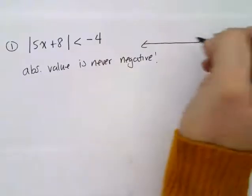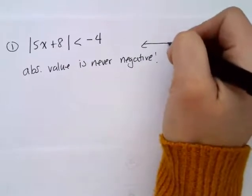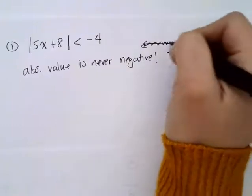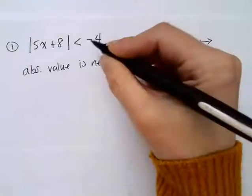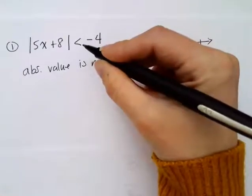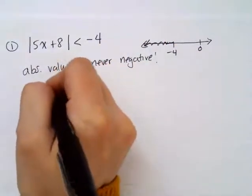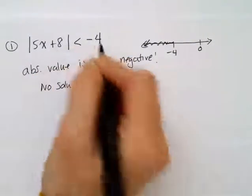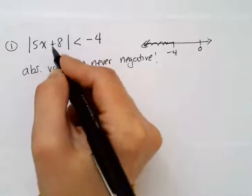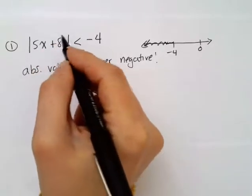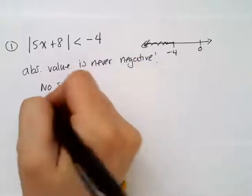If we think about where negative 4 lives on the number line — 0 is here, negative 4 is here — less than negative 4 is to the left of negative 4, and all those numbers are also negative. So if absolute value is never negative, this statement can never be true, because that would mean absolute value is another negative number. This case has no solutions. No matter what I plug in for x, the absolute value will always be 0 or bigger than 0 — never less than negative 4. Empty set.